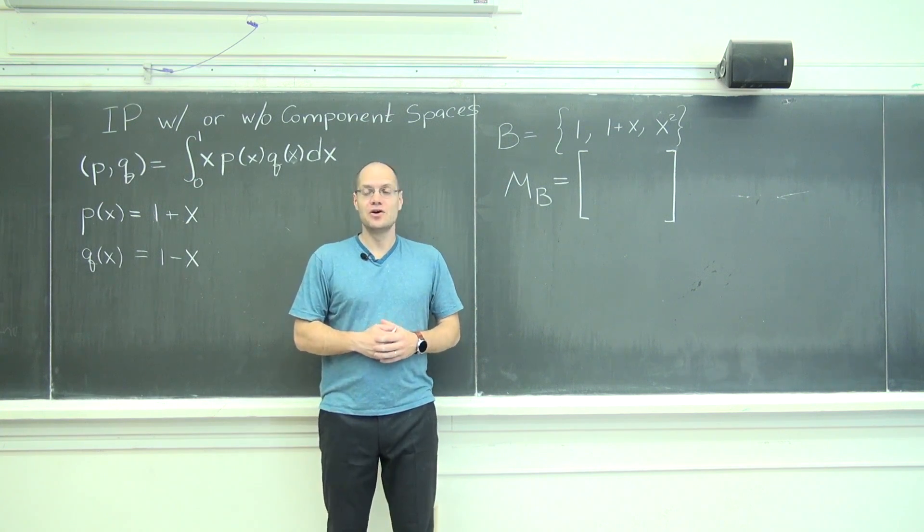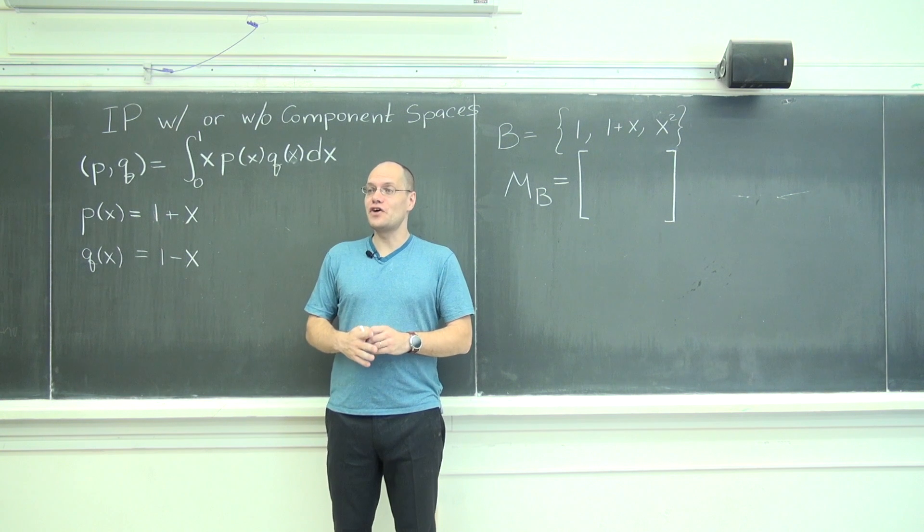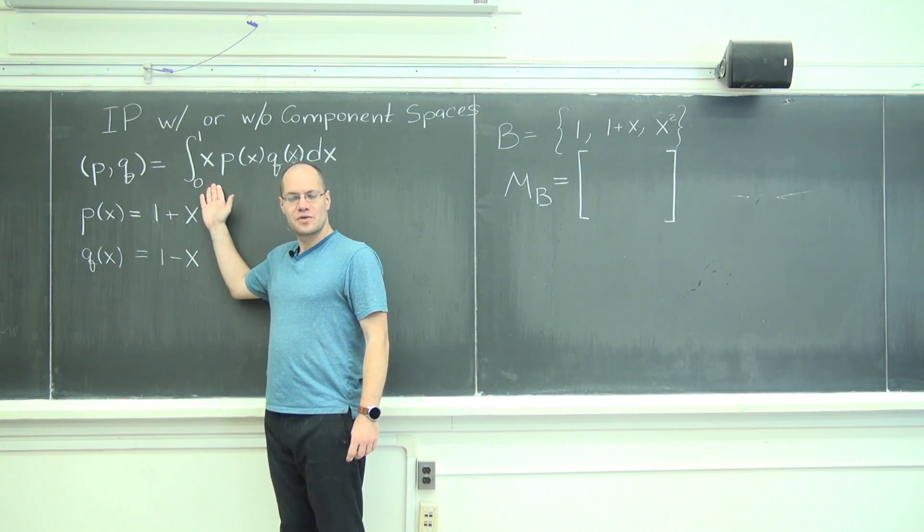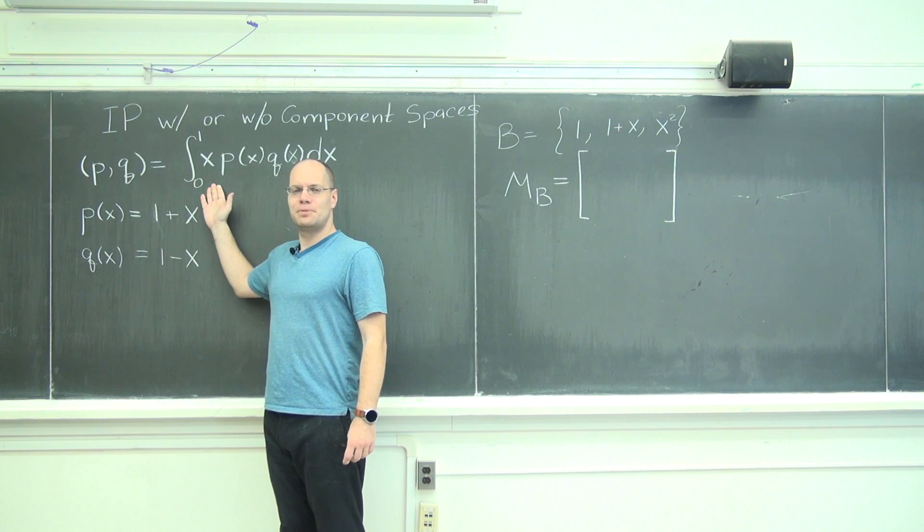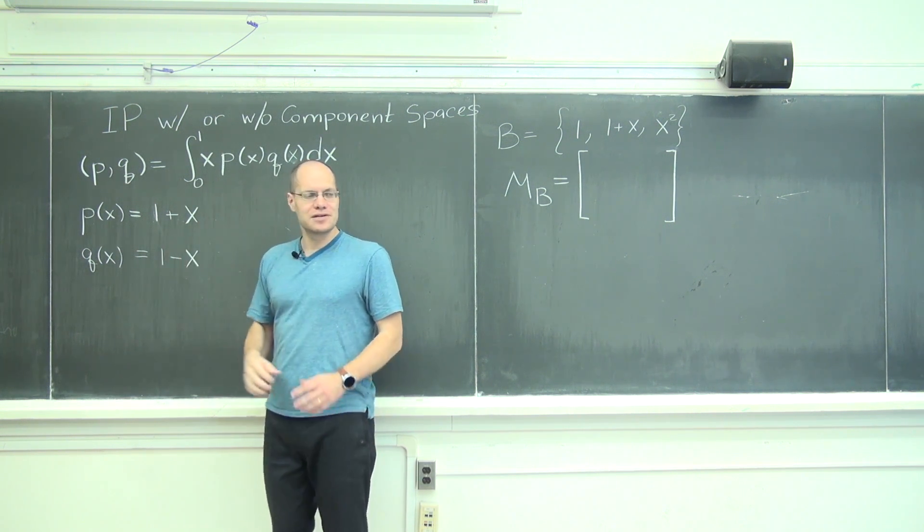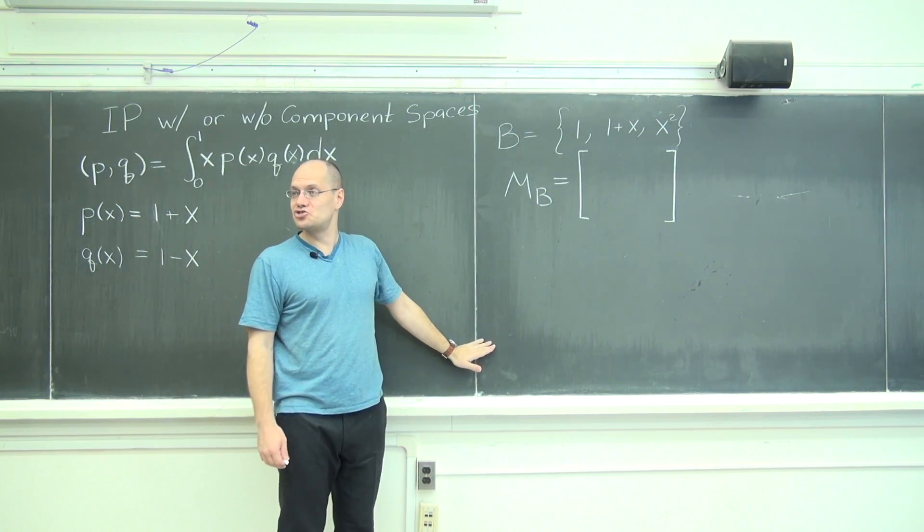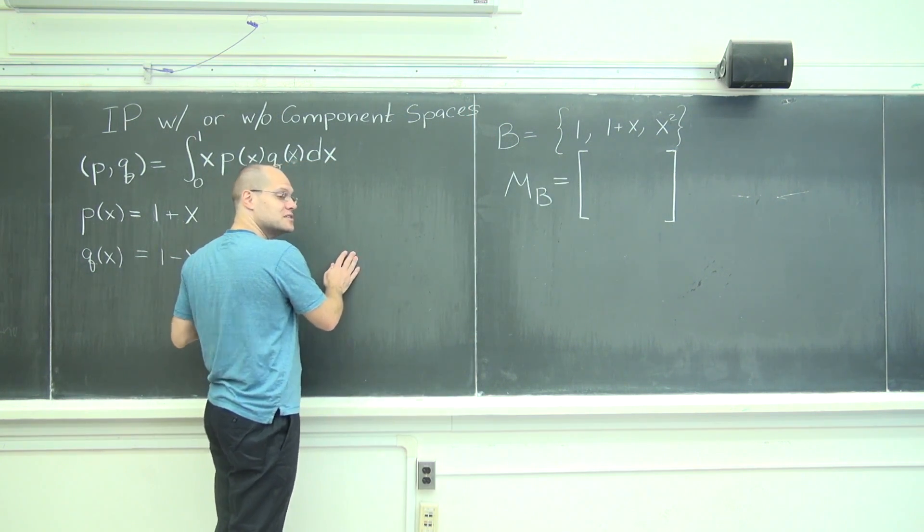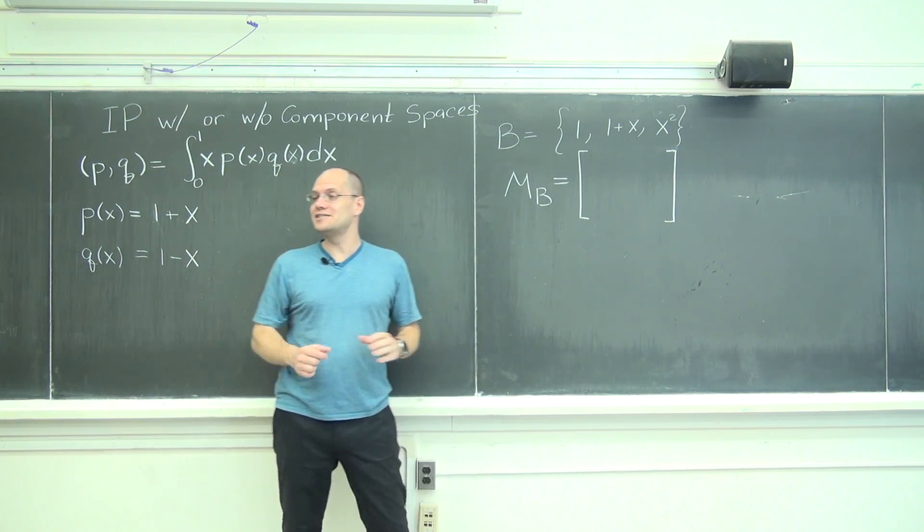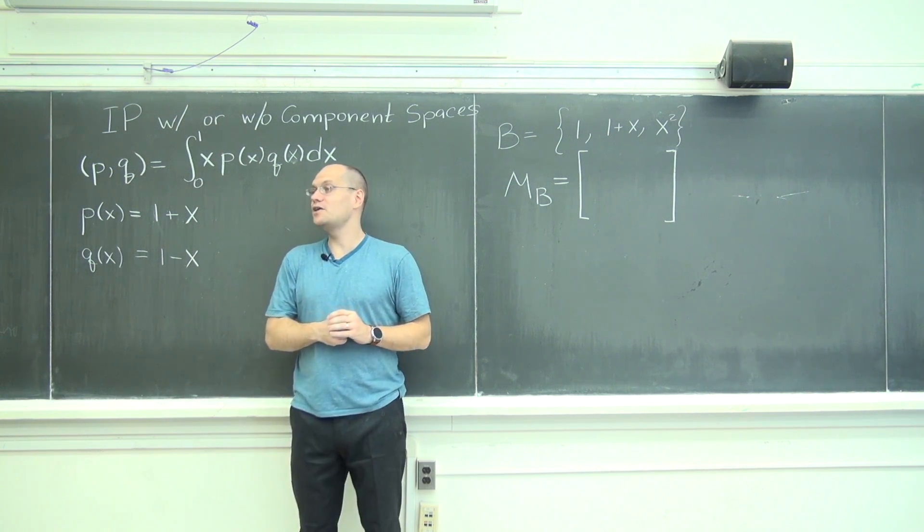So here's what we're going to do now. We're going to evaluate the same inner product twice. First, we'll do it directly using the definition without any mention of bases or component spaces. Then we will perform the equivalent operation in the component space. So this line right here is the strict divide between the quote-unquote real space and the component space, and the point of this exercise is for these concepts to crystallize in your mind.